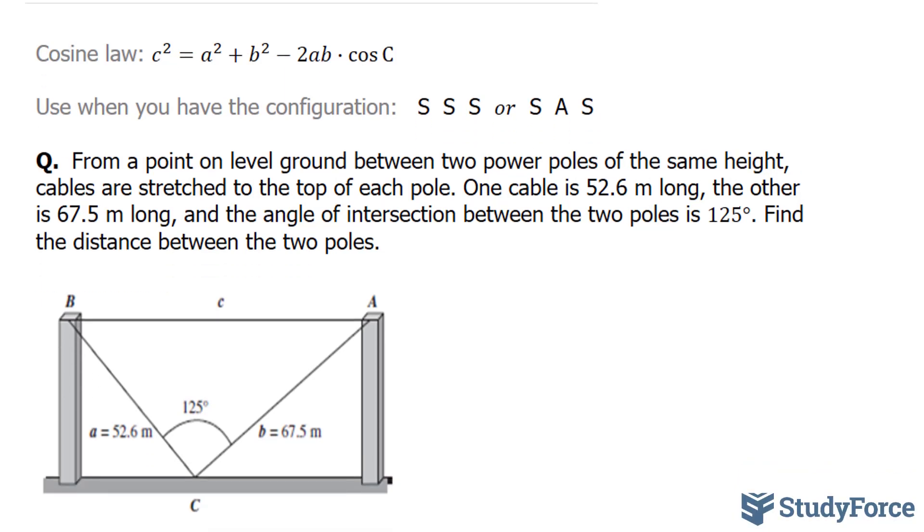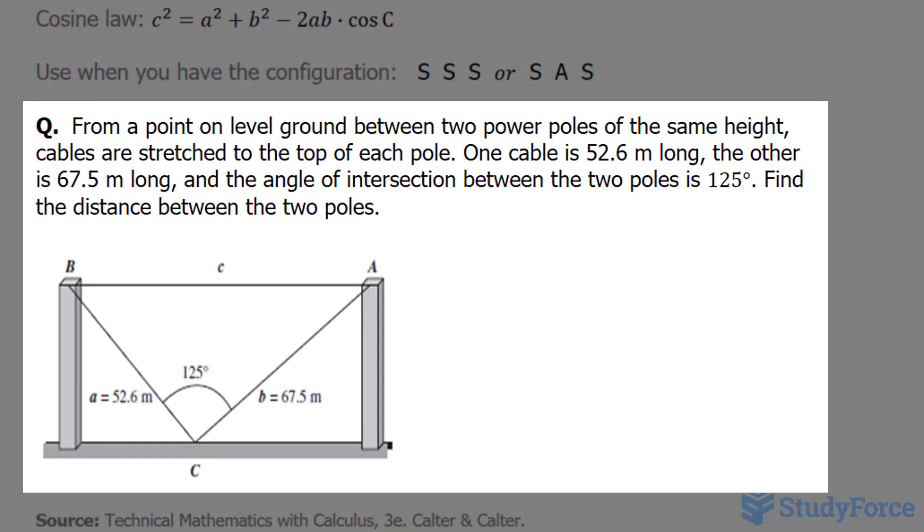The question reads: From a point on level ground between two power poles of the same height, cables are stretched to the top of each pole. One cable is 52.6 meters long, shown here. The other is 67.5 long, and the angle of intersection between the poles is 125 degrees. Find the distance between the two poles.